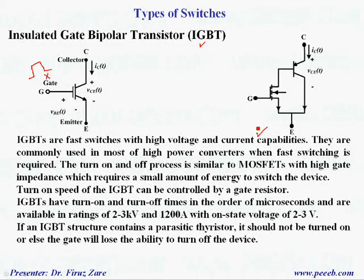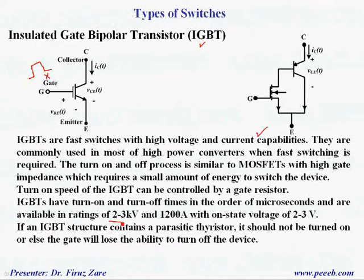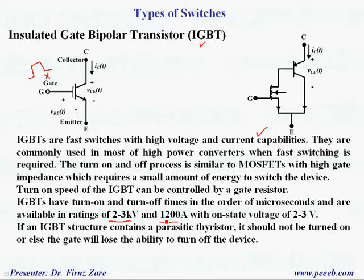IGBTs are very fast and can operate at high voltage — for example, around 2 to 3 kilovolts — and at high current, for example 1200 amps. The voltage drop across the switch when it is in the on state is between 2 and 3 volts.